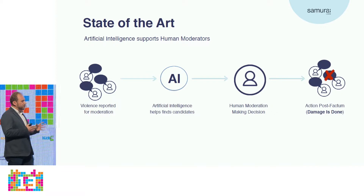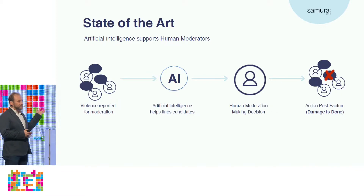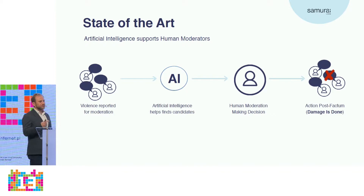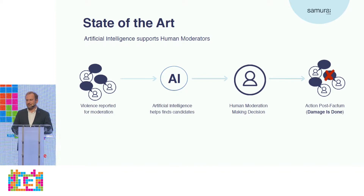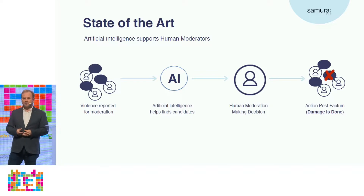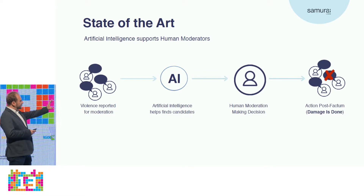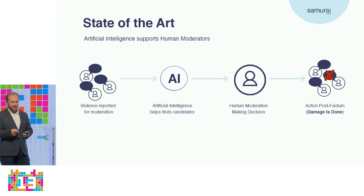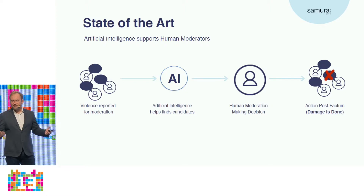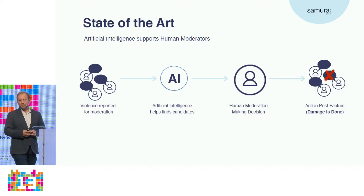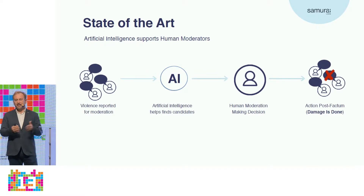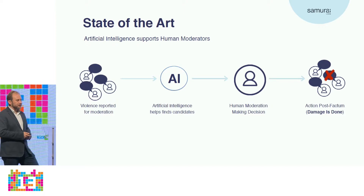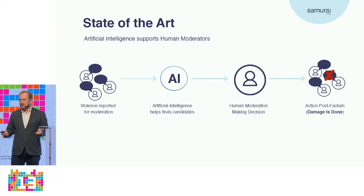Currently, the state of the art used by Facebook, Google, and the big platforms is an AI-assisted reporting model: if something happens and someone attacks us, artificial intelligence helps find the right candidates and a human moderator decides if there's a violation. There are more people working in Facebook content moderation than in almost any other area, and while it's a good model and great progress, only 20% of kids will actually report that something happened.